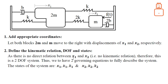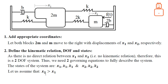Since we have defined the degrees of freedom x1 and x2, we can now define the states, which are the derivatives of the given coordinates. So for x1 we have displacement, velocity, and acceleration of 2M, and similarly for x2. After defining the degrees of freedom and states, we also need to make an assumption about the displacements — let's say x2, the displacement of M, is greater than x1.